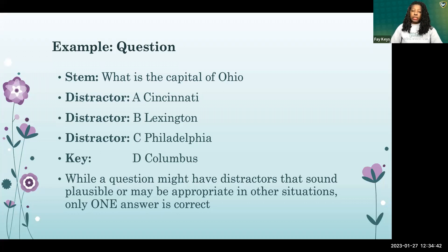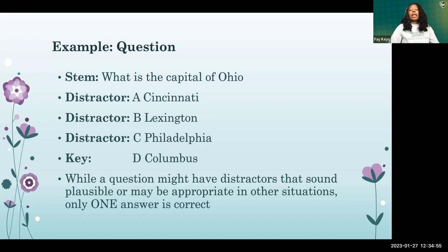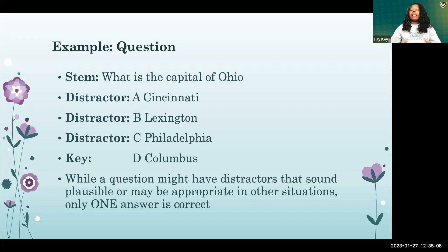Here's an example question: What is the capital of Ohio? The distractors are Cincinnati, Lexington, and Philadelphia. While questions may have distractors, there is only one correct answer. The key here is Columbus.